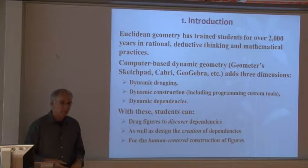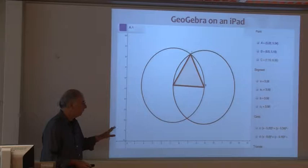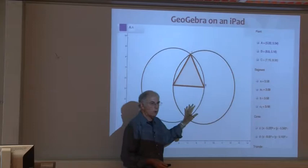With these three features, students can drag figures around to discover the dependencies that exist within them, and then they can design and create their own figures with similar dependencies. It's this combination of discovery and creation, supported in a special way in dynamic geometry, that allows for an approach I consider human-centered, where students are doing active discovery and active creation of geometric objects. This is a screenshot of GeoGebra on the iPad, where you can construct figures and see the objects listed.